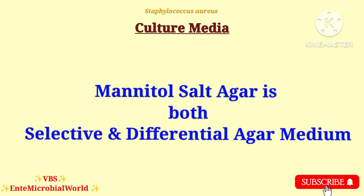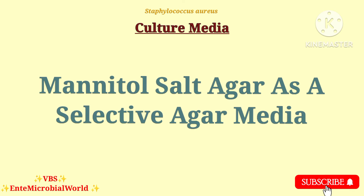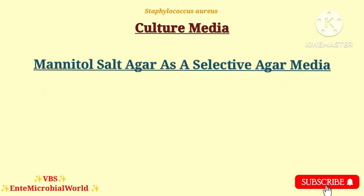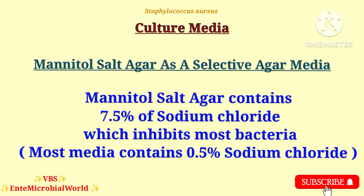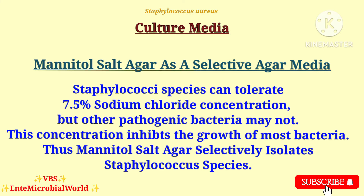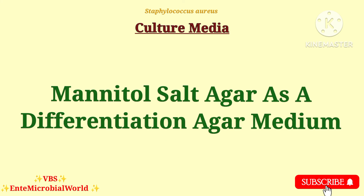Mannitol salt agar is both a selective and differential agar medium. As a selective medium, mannitol salt agar contains 7.5% sodium chloride, whereas most media contain only 0.5% sodium chloride. Staphylococcus species can tolerate 7.5% sodium chloride concentration but other pathogenic bacteria may not. This concentration inhibits the growth of most bacteria, thus mannitol salt agar selectively isolates Staphylococcus species.